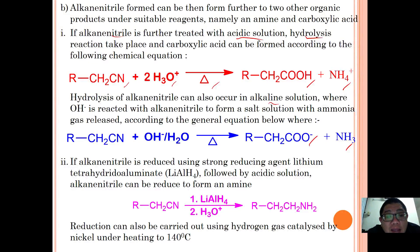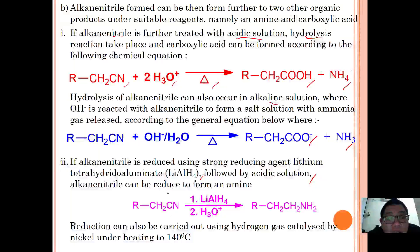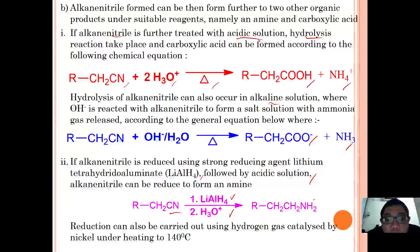If the alkyl nitrile is treated with a strong reducing agent such as LiAlH4 (lithium tetrahydroaluminate) followed by acidic solution H2O+, it can be reduced to an amine. The general equation: RCH2CN with LiAlH4 followed by H2O+ forms RCH2CH2NH2. Hydrogen is directly added to both the C and N atoms.